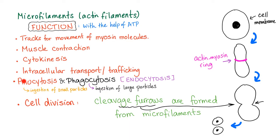Pinocytosis and phagocytosis — together we call them endocytosis. Pinocytosis is ingestion of minute, small particles, while phagocytosis is ingestion of large particles. They also help in cell division by forming cleavage furrows, which are made of microfilaments. If this is the cell and it's going to divide, an actin-myosin ring forms at the center, creating a furrow or indentation into the cell, and then the cell separates into two different cells.